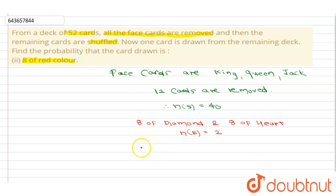Therefore, we can write required probability is always number of favorable events which is equal to 2 divided by number of total events which is N of S, which is equal to 2 divided by 40 which is equal to 1 by 20.